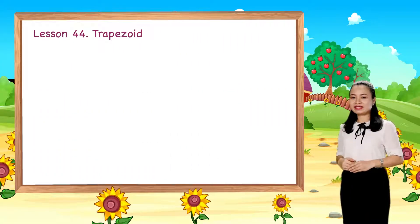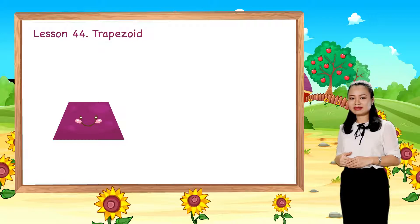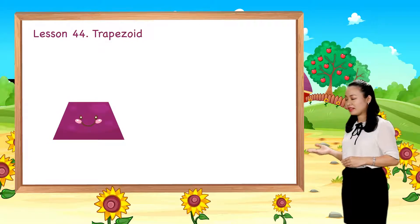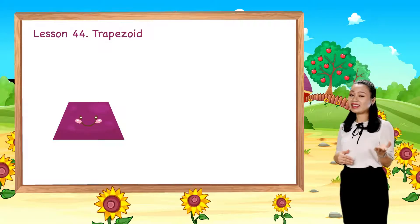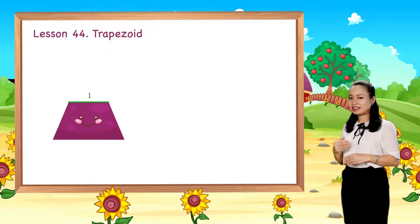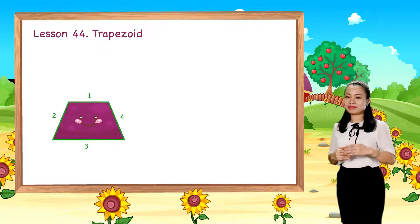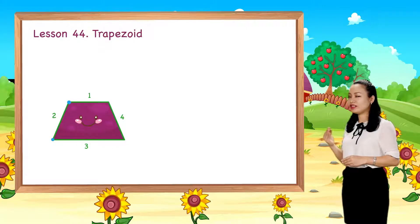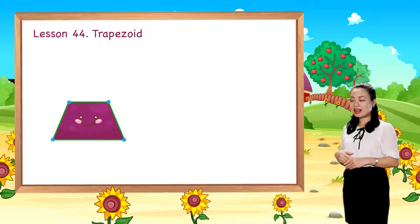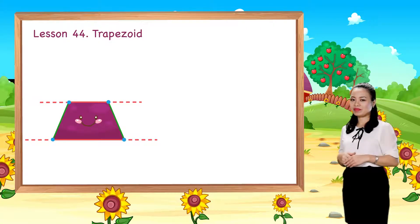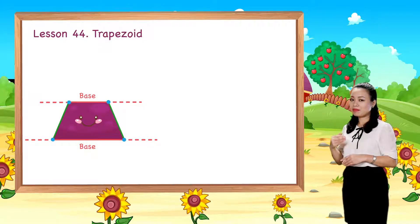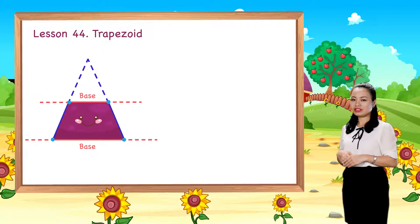Now let me introduce you to trapezoids. This is a trapezoid. It has four straight sides and four corners. This pair of opposite sides are parallel, so they are called the bases. This pair of opposite sides are not parallel, so they are called the legs.